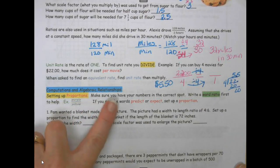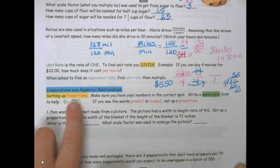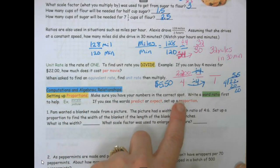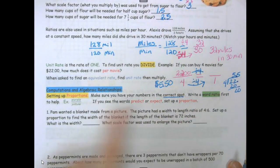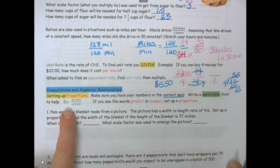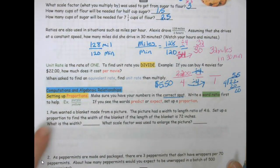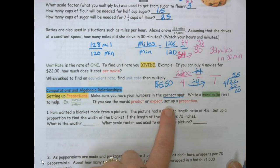Computation, algebraic relationships. Setting up proportions, make sure you have your numbers in the correct spot. Write the word ratio first to help. Purple, yellow. That's what we did up here earlier. If you see the words predict or expect, set up a proportion.